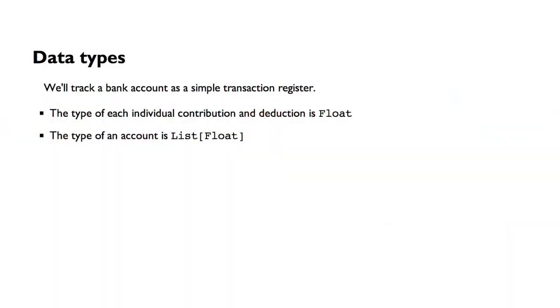For this simplified example, when we talk about a bank account we're really just talking about a list of transactions that have happened. My bank account is the list of all the deposits and withdrawals I've ever made. So the type of an account will be a list of floats, and an individual contribution or deduction from the account is a single float.